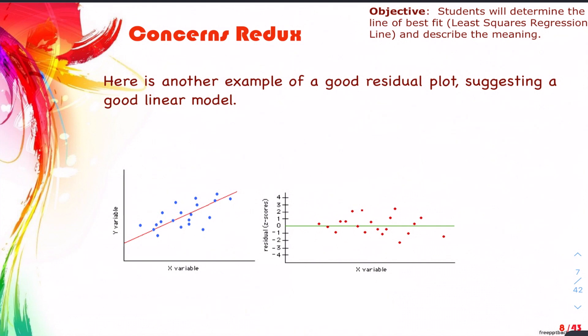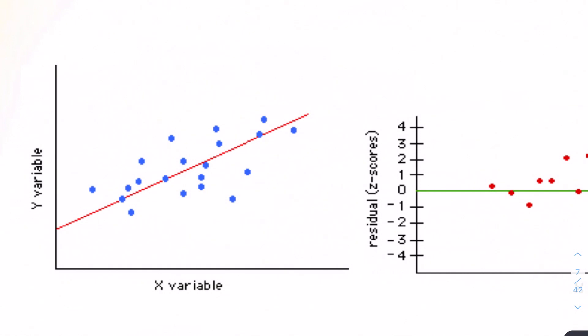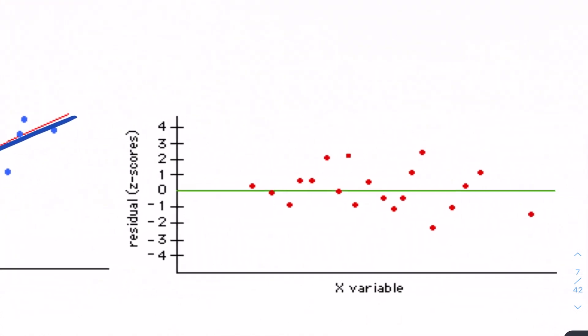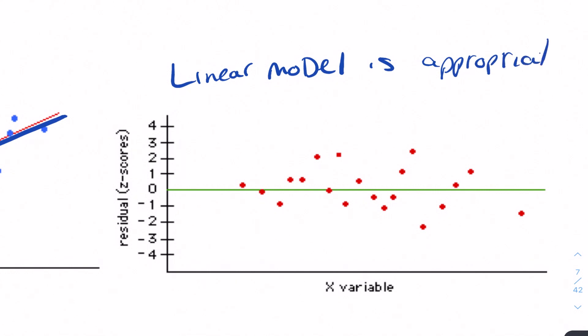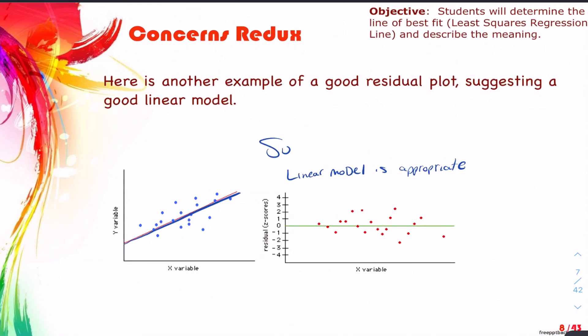Here's another example of a good residual plot suggesting a good linear model. With our scatterplot of the explanatory versus response variable, we see a positive association. With our model, it looks like it goes up and down, but in general there is good random scatter. So a linear model is appropriate. That's really what we want — sufficiently linear. We don't want perfection, we just want good enough.